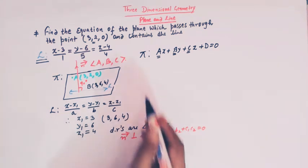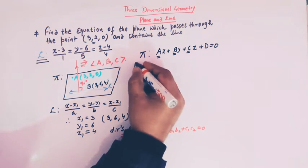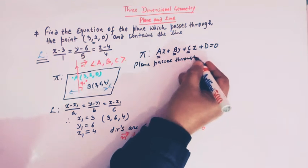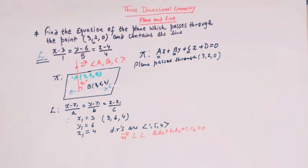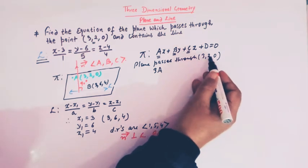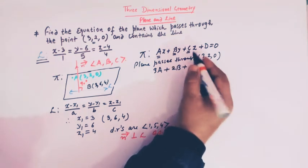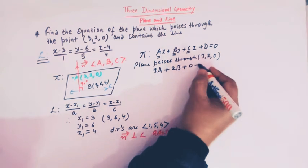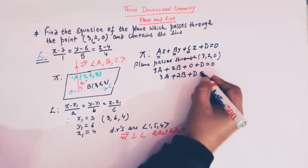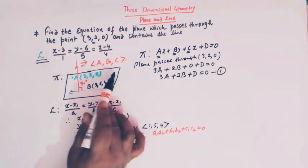This plane passes through the point (3, 2, 0), so it must satisfy the plane equation. Substituting x = 3, y = 2, z = 0, we get 3A + 2B + 0 + D = 0, giving us 3A + 2B + D = 0. This is condition number 1.